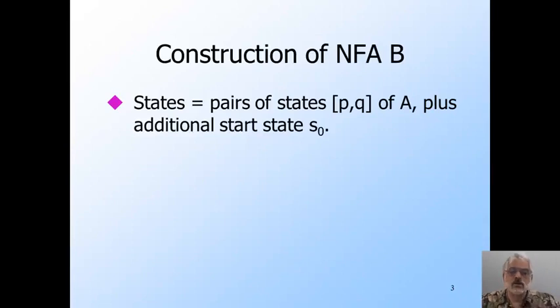B starts out in S0, makes one epsilon transition, and from then on never returns to S0. And after that, B will always be in a state that is a pair PQ of A states, and furthermore, it will make no more epsilon transitions.